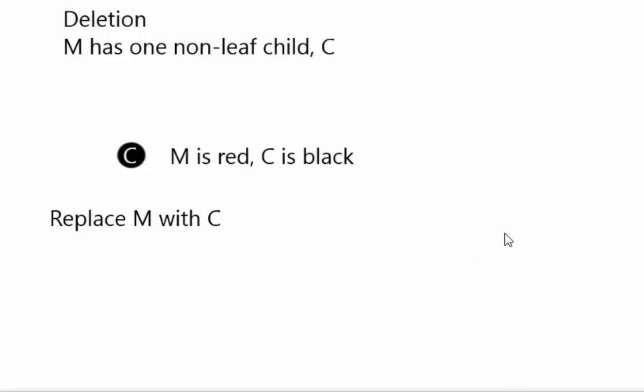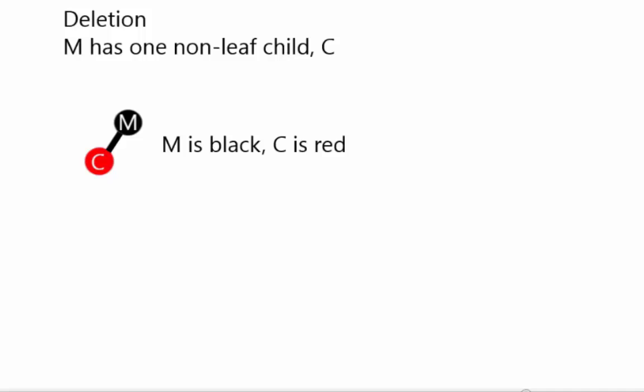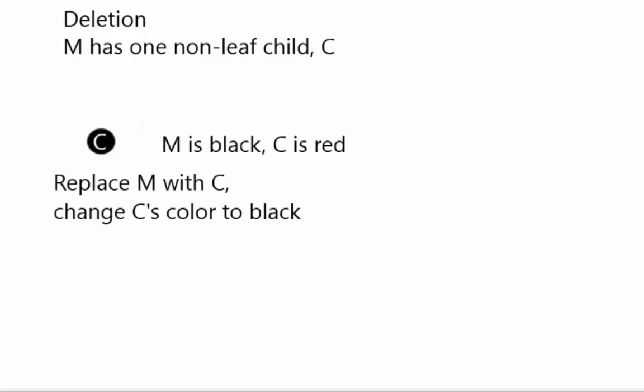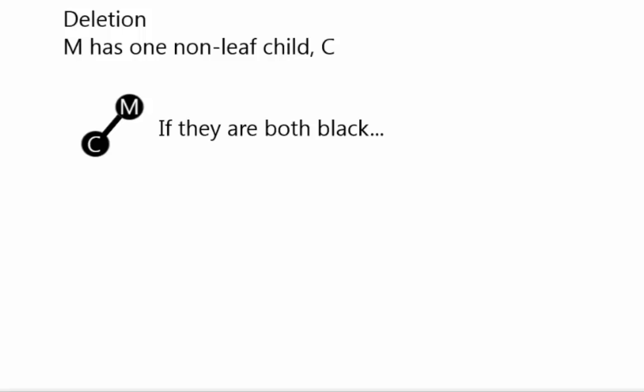When we're looking at coloring, if we have a red node M and C is a black child, we basically just move C up. Because if we delete a red node out of a tree, that doesn't mess with any of the counts going from the root to the leaves. Similarly, if M is black and C is red, we can just take C, move it into M's spot, and make C a black node. Once again, we're not messing with any of the counts when we delete a red node.